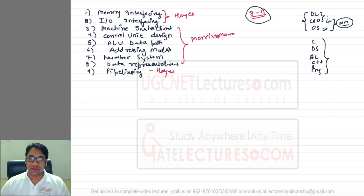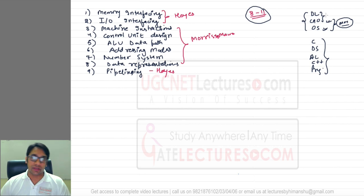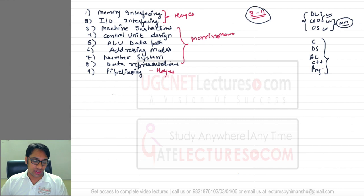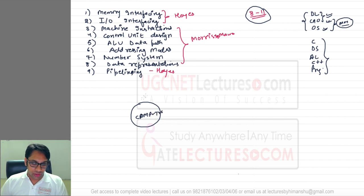For digital logic and computer architecture, there are topics which overlap. For example, when discussing the data bus or system bus design, it is made up of multiplexers, which we also studied in digital logic. There is also the number system, which appears in both digital logic and computer architecture. So instead of covering it twice, I cover it only once. We are going to discuss all these topics in detail, but first we need an introduction to computer architecture.